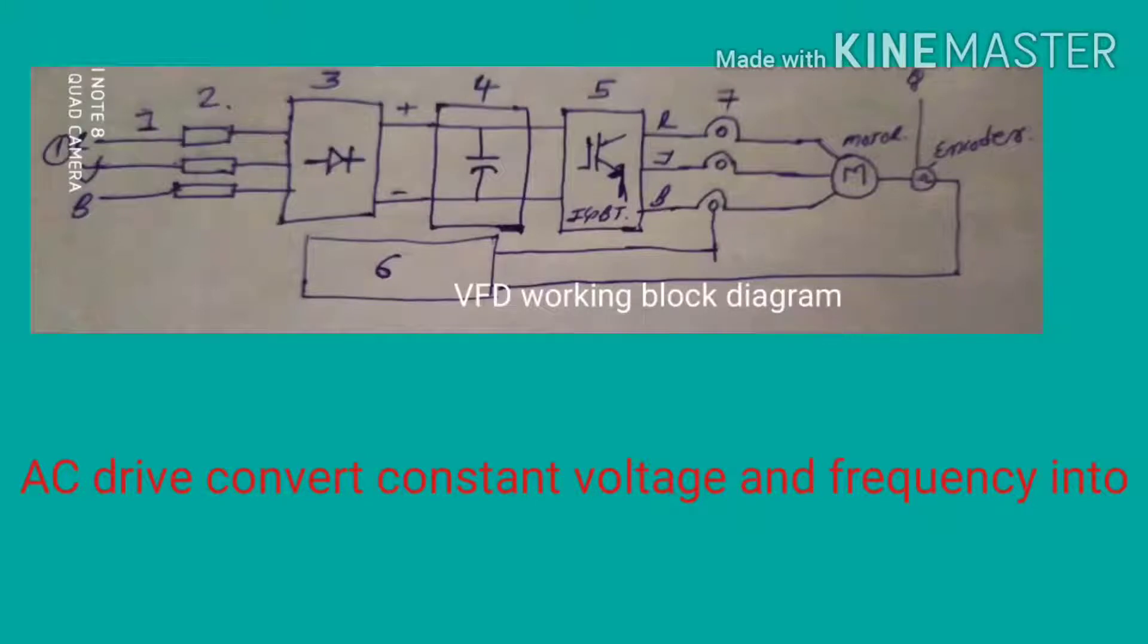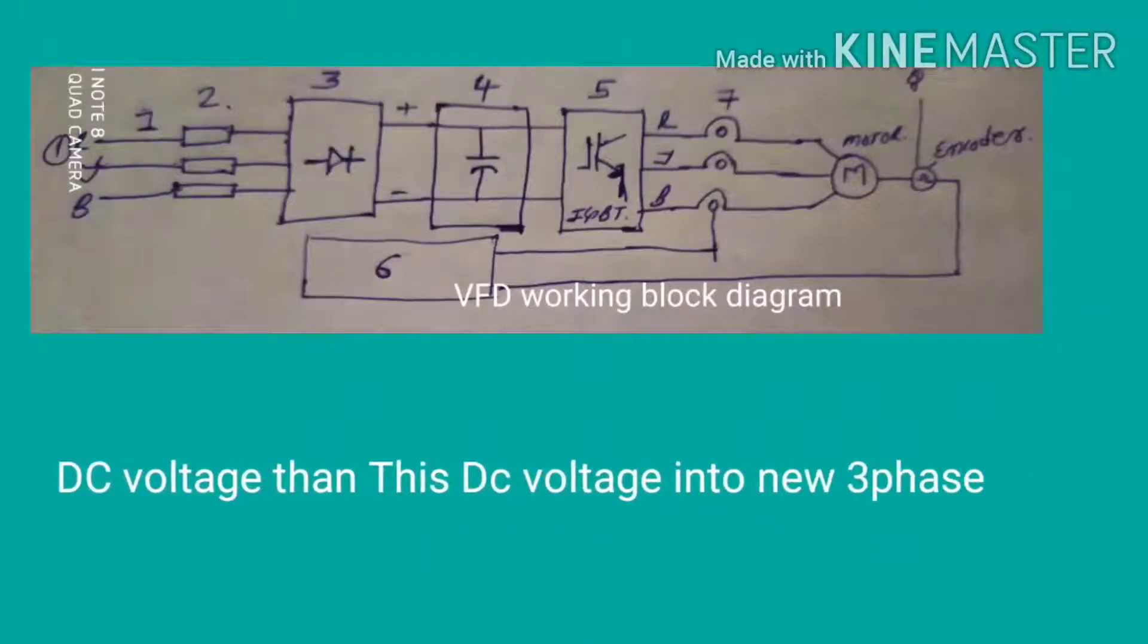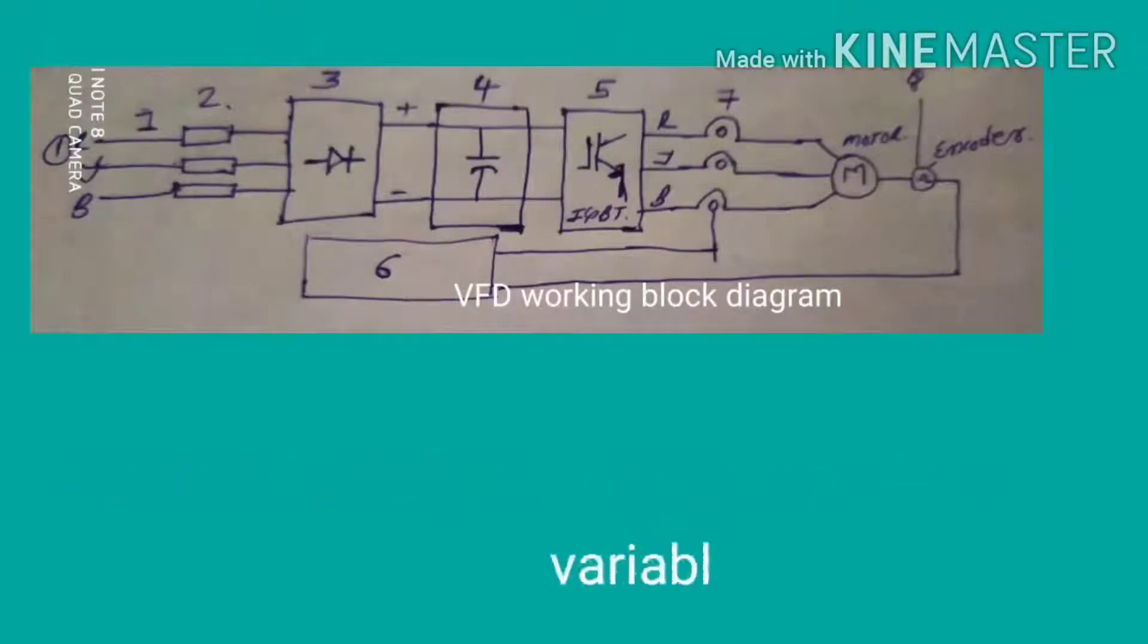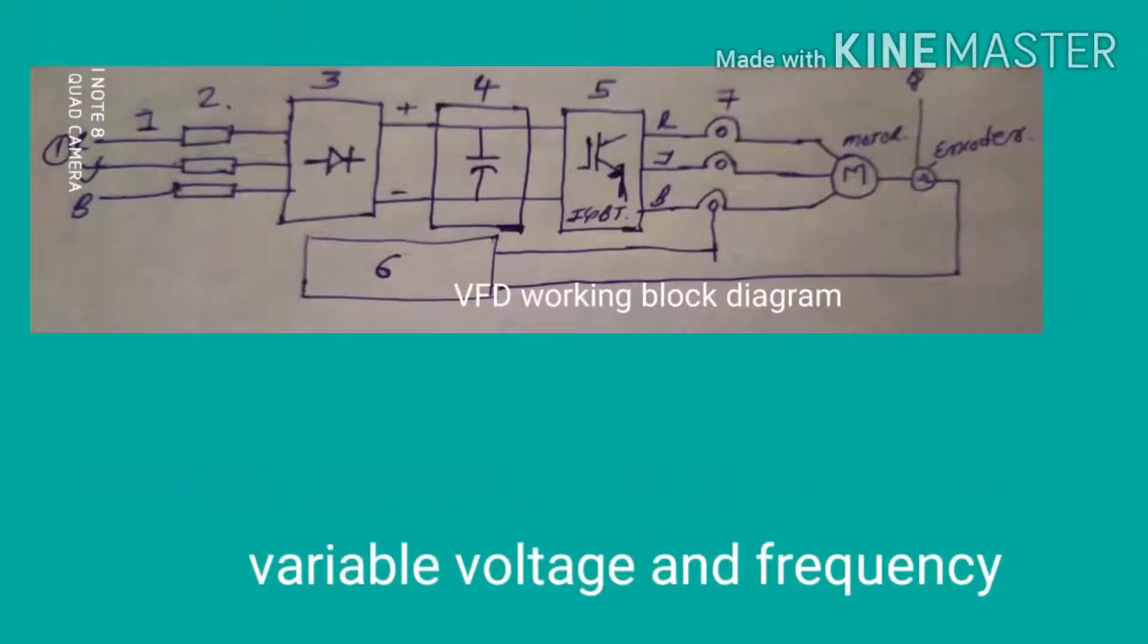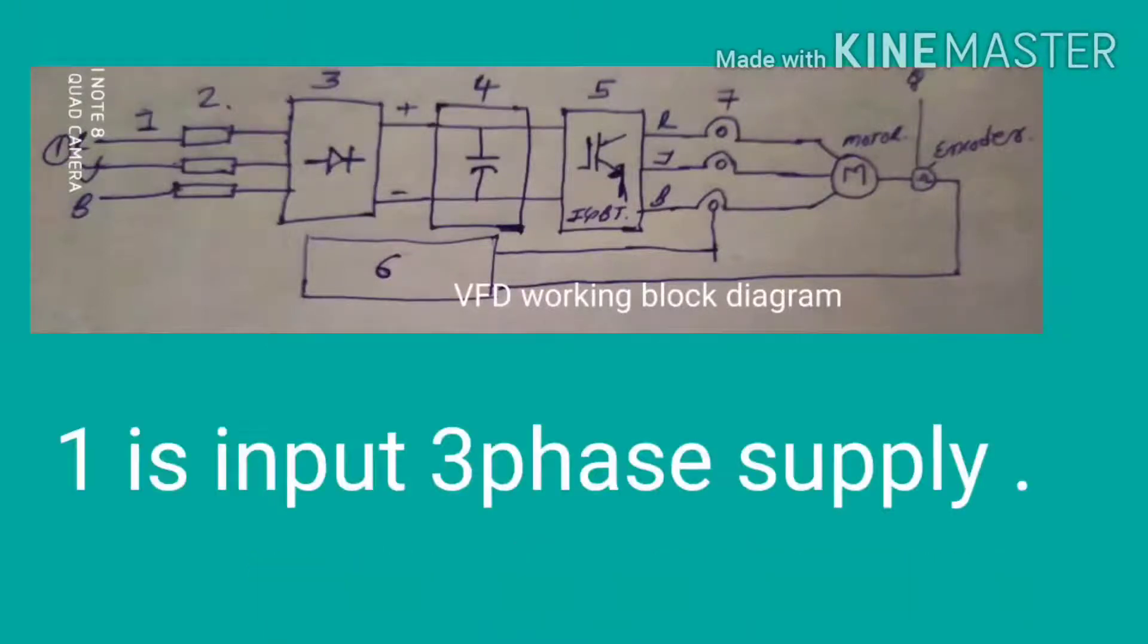First, AC drive converts constant voltage and frequency into DC voltage, and then this DC voltage is converted into variable three-phase alternating AC voltage. What equipment is required and what steps are carried out in the VFD is shown here in the VFD working block diagram.